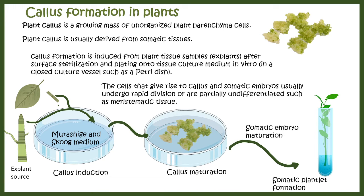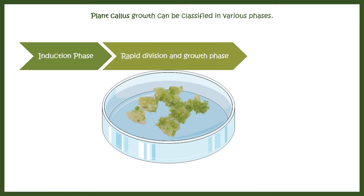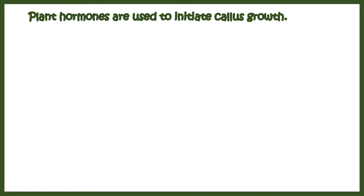These callus tissues eventually mature into a somatic plantlet that can be placed into soil or grown artificially. Callus growth has at least three phases: the induction phase, the rapid division and growth phase (analogous to a log phase), and then a declining phase where the callus stops growing, with possible infection and scarcity of media and nutrients.